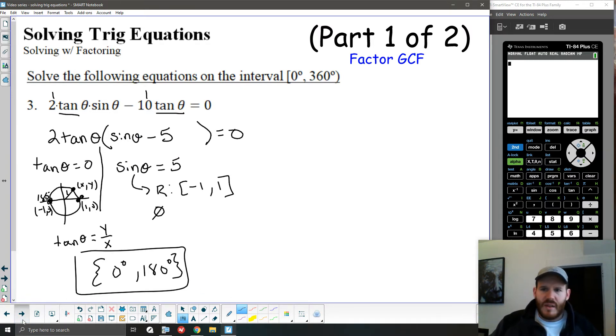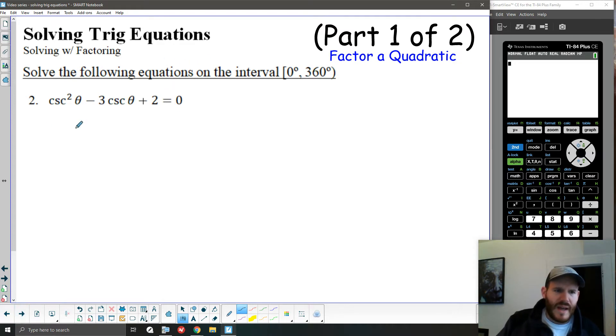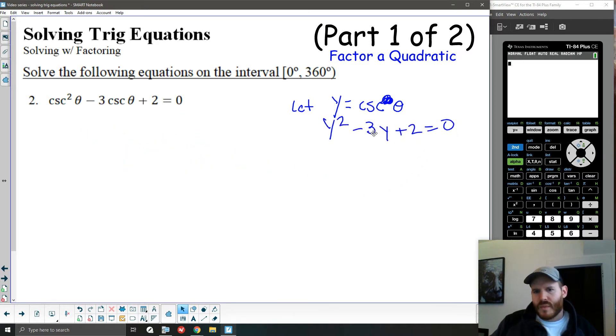So this can get a little bit more involved if instead of just a common factor, we're talking about factoring a quadratic expression. In this case, to help you visualize this, if you think of really y is equal to cosecant squared theta, we call this a variable substitution, by the way. So if I let y, just some variable I invented, equal cosecant theta, this expression we're looking at here is really y squared minus 3y plus 2 equals 0, which is similar to any quadratic equation that we've solved before.